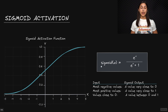When sigmoid is applied to a layer, it is being applied to each of the nodes within that layer. So for a fully connected layer, for example, we will take the sigmoid of each of the weighted sum of inputs for each node within that layer.